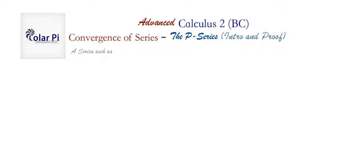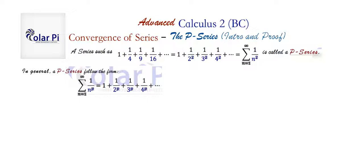So what is a P series? A series such as this is called a P series. In general, a P series has this form. And when P is equal to 1, we get the harmonic series.